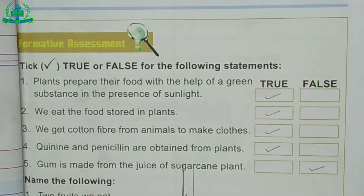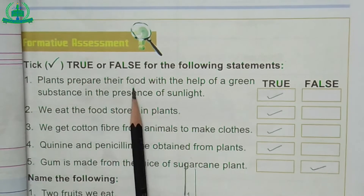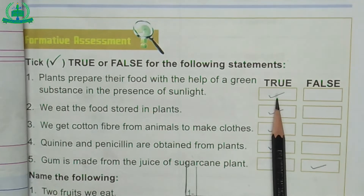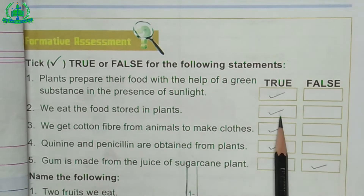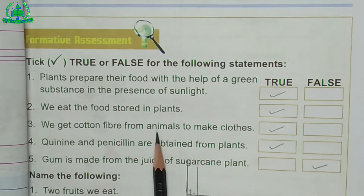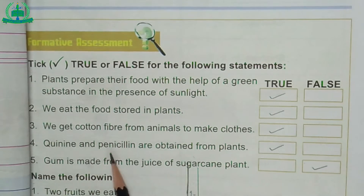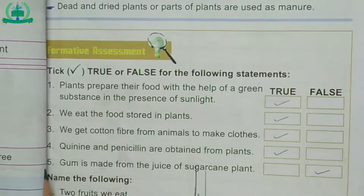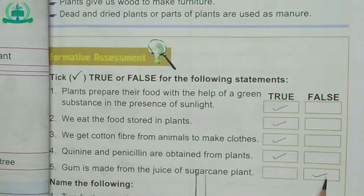See page number 17. Tick true or false for the following statements. Number 1: Plants prepare their food with the help of a green substance in the presence of sunlight — True. Number 2: We eat the food stored in plants — True. Number 3: We get cotton fiber from animals to make clothes — True. Number 4: Quinine and penicillin are obtained from plants — True. Number 5: Gum is made from the juice of sugarcane plant — False.